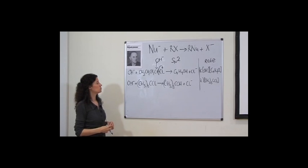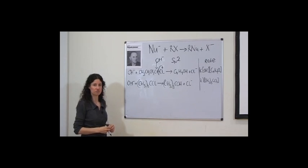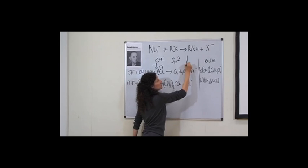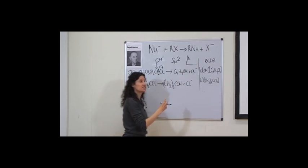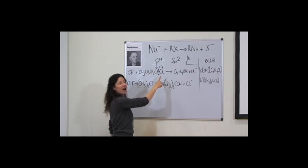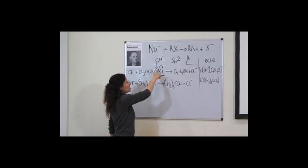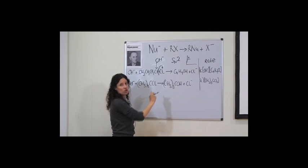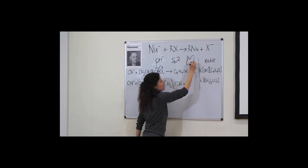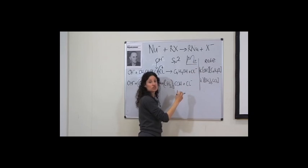If we were to sketch an energy profile for this reaction, we would see that the energy increases as we form a transition state — a high energy transition state — with the OH partially bonded and the chloride partially bonded, and then decreases to the final product state.